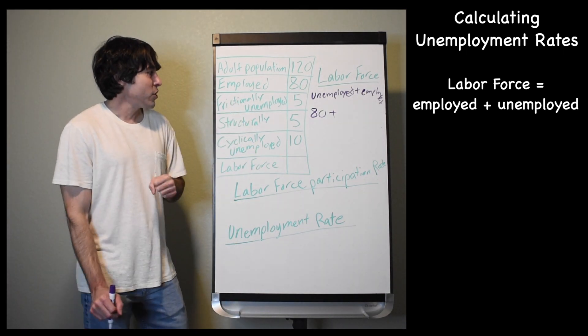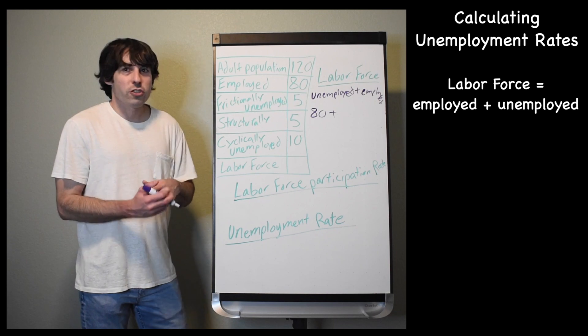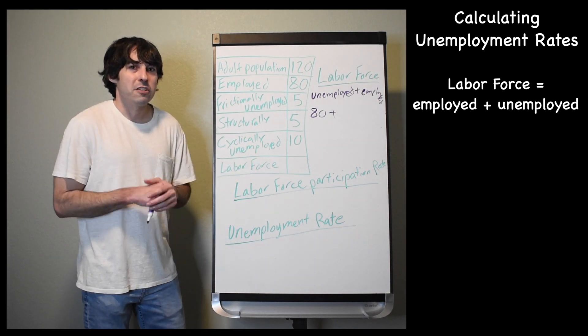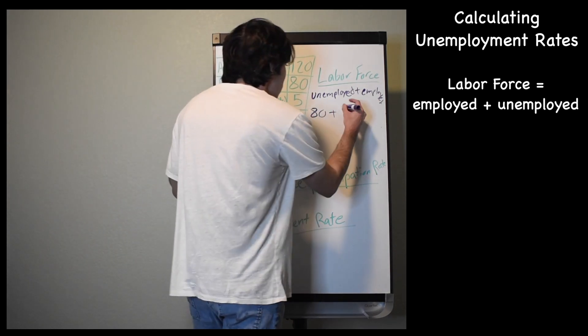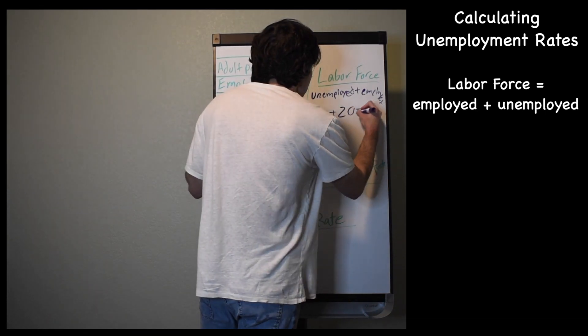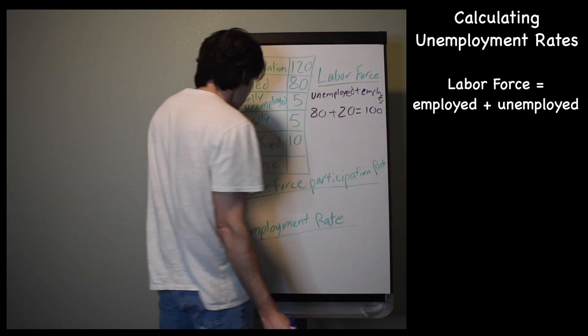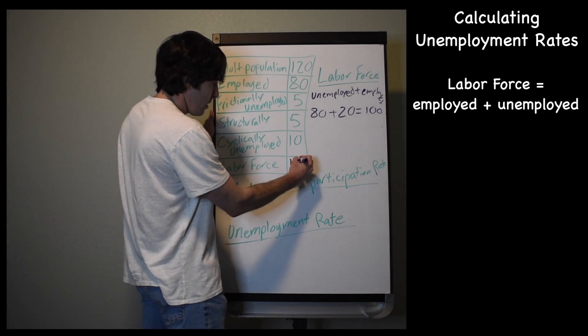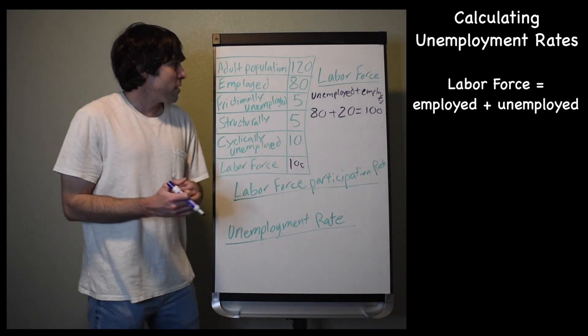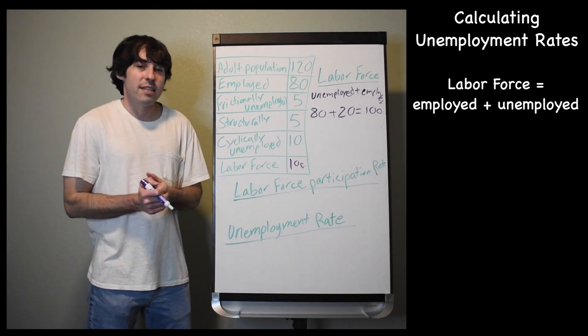In whatever country this is, we have 5 people that are frictionally unemployed, 5 people that are structurally unemployed, and 10 people that are cyclically unemployed. When we add that all up together, that comes out to 20, and our labor force is going to be 100. So there are 100 people in the labor force in this country.